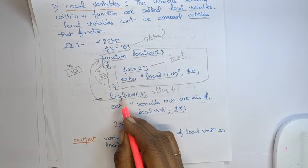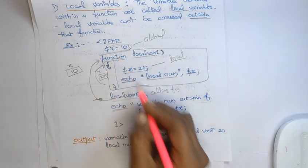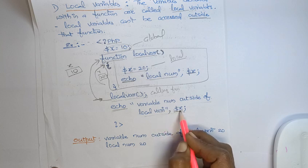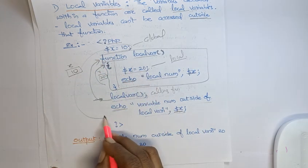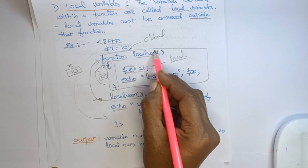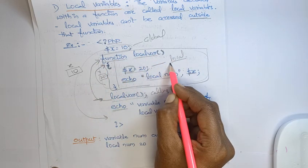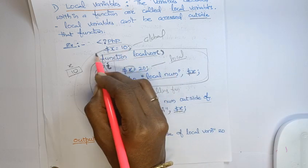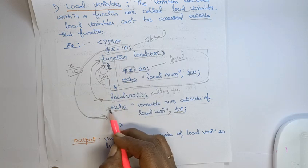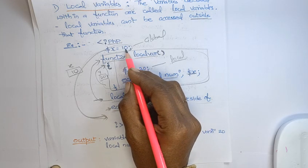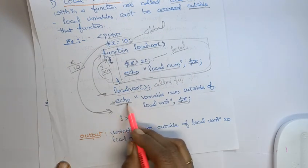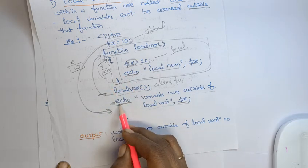I am calling the function. After calling the function, I am again accessing the x value outside of the function. Whenever you access this x value outside of the function, it will not take the variable inside the function — that variable is accessible within the function only, which is why it is called a local variable. Outside of the function, this echo statement will take the value 10.